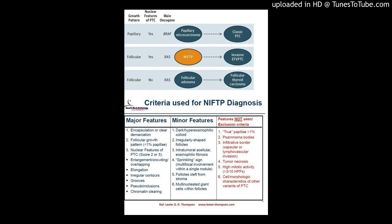The fibrous capsule may be thick, thin, partial, or the lesion may be well circumscribed and clearly demarcated from adjacent thyroid tissue. The follicular growth pattern may be microfollicular, normofollicular, or macrofollicular with abundant colloid.